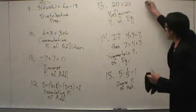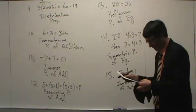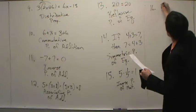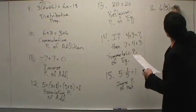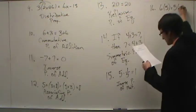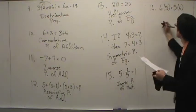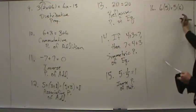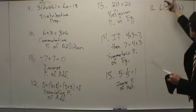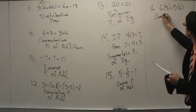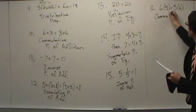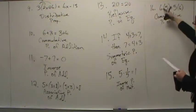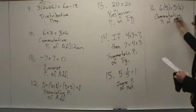Number sixteen: six times five is five times six. What's being emphasized? The numbers six and five switched location. This is the commutative property of multiplication.